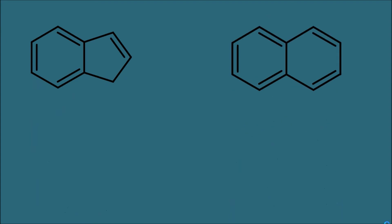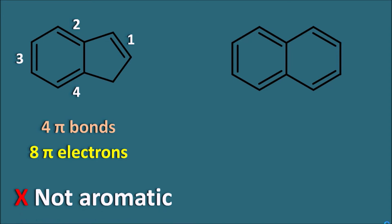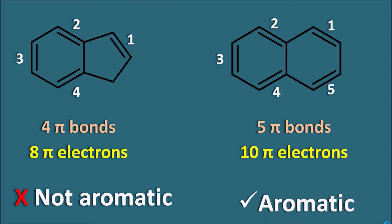Consider two examples. The first structure has 4 pi bonds, giving 8 pi electrons. Since 8 does not match 4n+2, it is not an odd number of pi bonds and therefore not aromatic. The second structure has 5 pi bonds — an odd number — giving 10 pi electrons. Since 10 matches 4n+2 (n=2), it obeys Hückel's rule and is aromatic in nature.